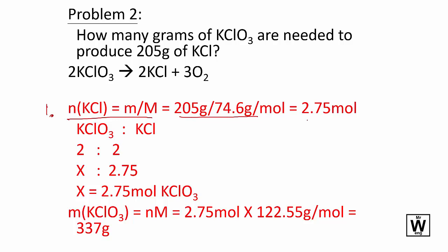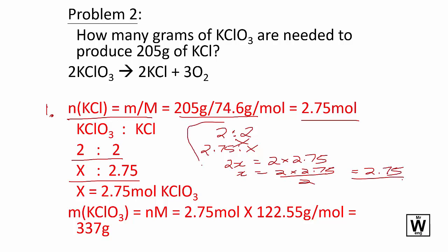Problem 2: How many grams of KClO3 are needed to produce 205g of KCl? Step one: n(KCl) = 205g/74.6g/mol = 2.75mol. The balanced equation shows a 2:2 ratio, so it's 2.75. Cross multiply: 2X = 2 × 2.75, so X = 2.75mol KClO3.